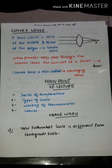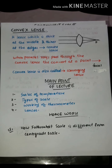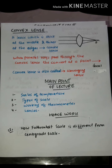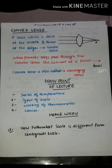Regarding lenses: lenses are transparent materials made of glass or plastic with one or both sides curved. There are two main types: convex and concave lens. A convex lens is thick at the middle and thinner at the edge. When parallel rays pass through a convex lens they converge at a point called the focal point, which is why it is also called a converging lens.